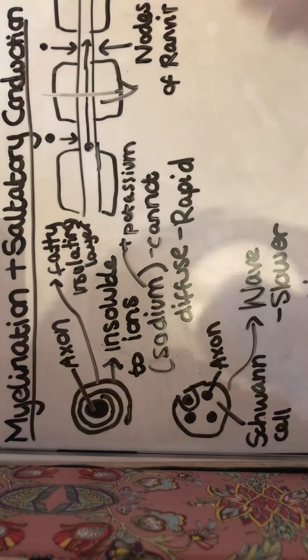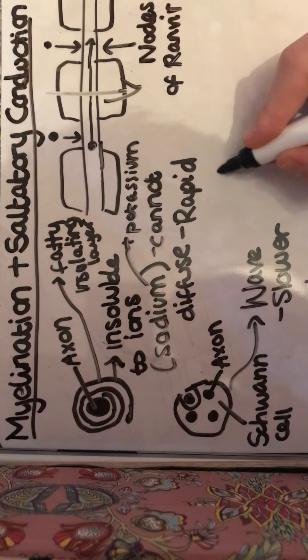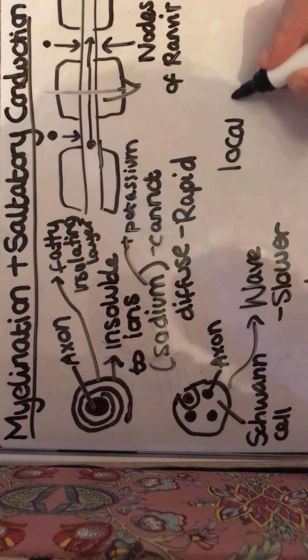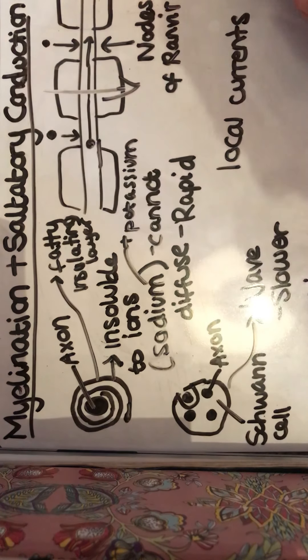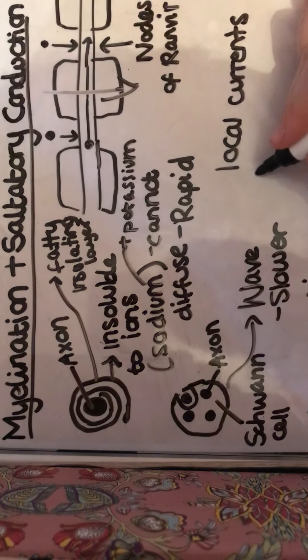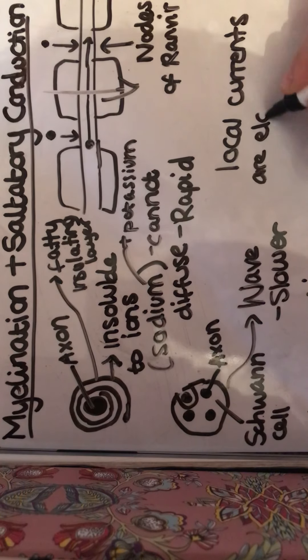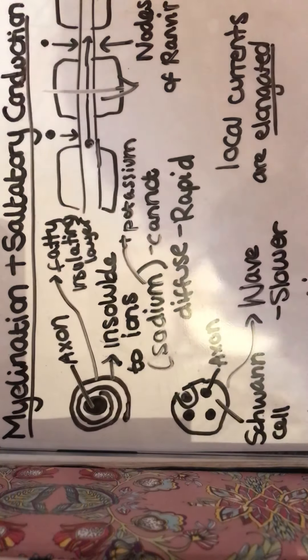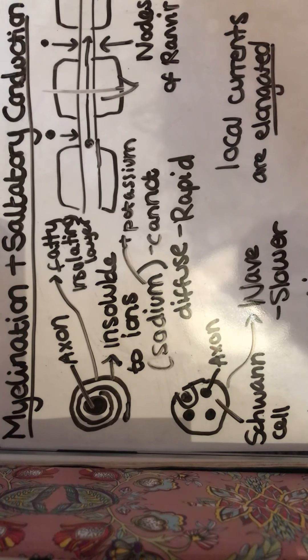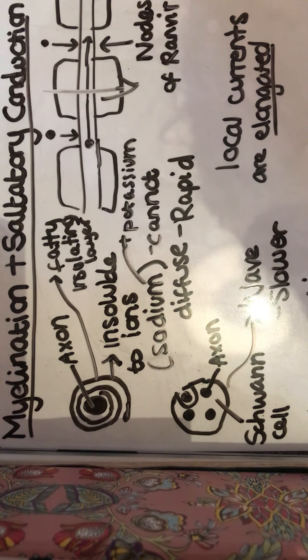So in myelinated neurons, the local currents—which is another video on specifically local currents—local currents are elongated and sodium ions diffuse along the neuron from one node of Ranvier to the other. And that is all that saltatory conduction is.